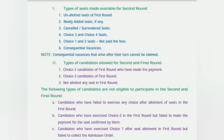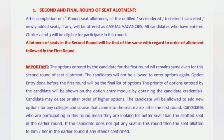The following candidates are NOT eligible for the second round. Candidates who failed to exercise any choice in the first round — if you didn't enter any choice in round one, you cannot go to round two. Only students who exercised some choices will proceed. Also, candidates who did Choice 2 in round one but failed to make payment of fees will not be able to participate in round two.